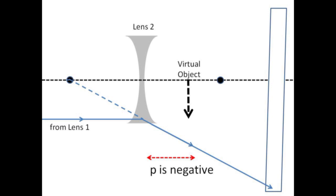The tricky part is that this is a virtual object located on the wrong side of the second lens with a negative object distance.